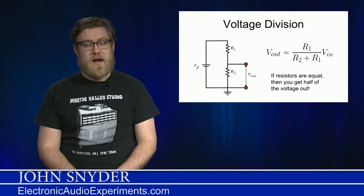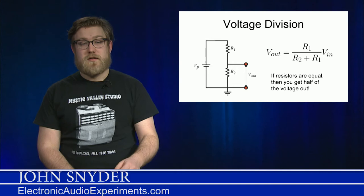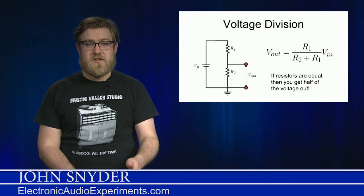As you can see, the relationship between R1 and R2 is going to scale V in to be smaller than V out. One special case is if these are equal. If R1 and R2 are the same value, then V out is equal to half of V in.